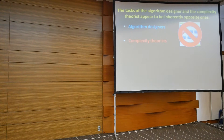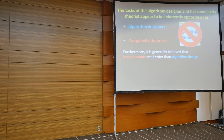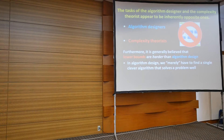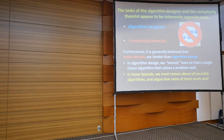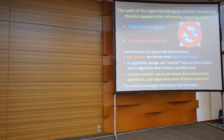In this viewpoint, the tasks of the algorithm designer and the complexity theorist appear to be inherently opposite. One is trying to come up with an algorithm; the other is trying to prove no efficient algorithm exists. It's generally believed that lower bounds are harder than algorithm design. In algorithm design, we only have to find one clever algorithm that works well. Whereas in lower bounds, we have to reason about all possible algorithms — even crazy ones we can't conceive of — and argue that none of them solve the problem. This belief is reflected in the literature: hundreds of algorithm papers are published every year, but very few concrete lower bound papers.